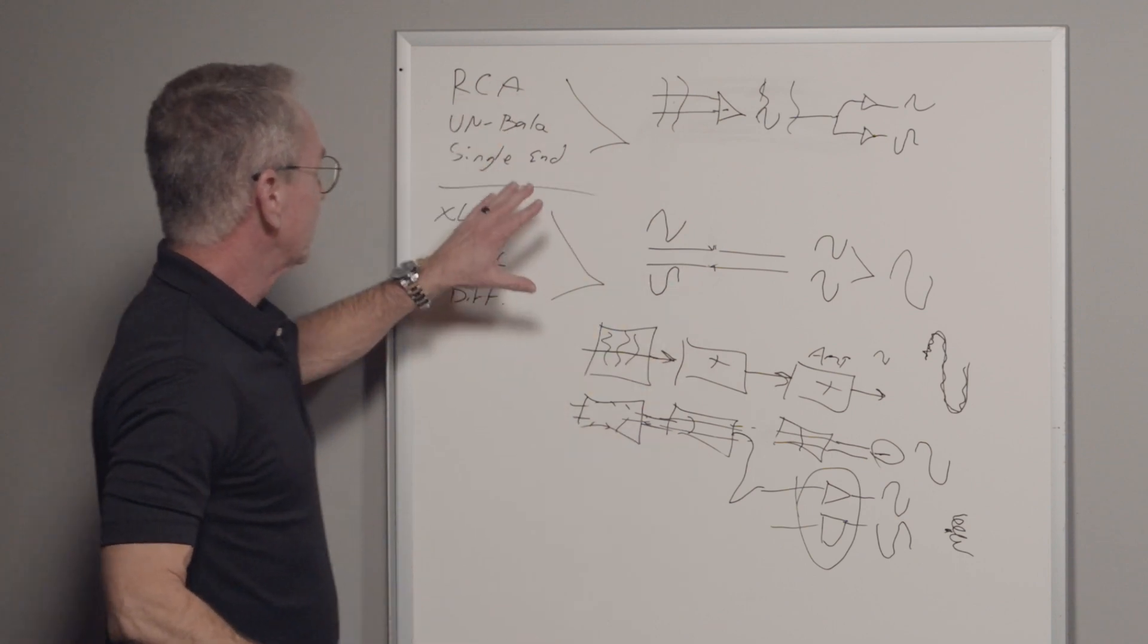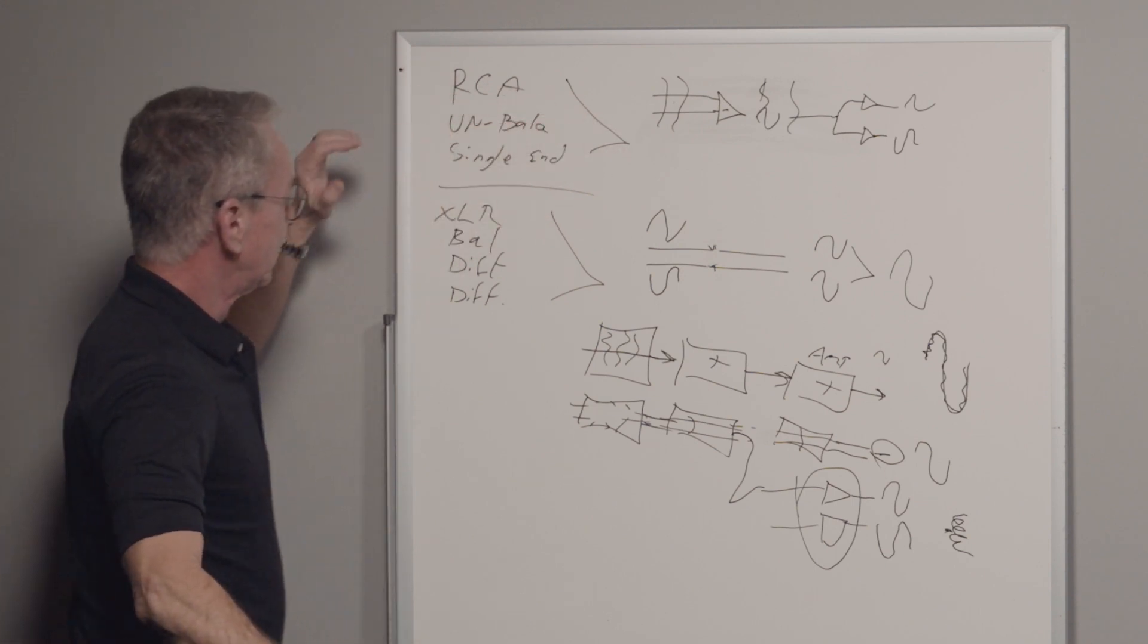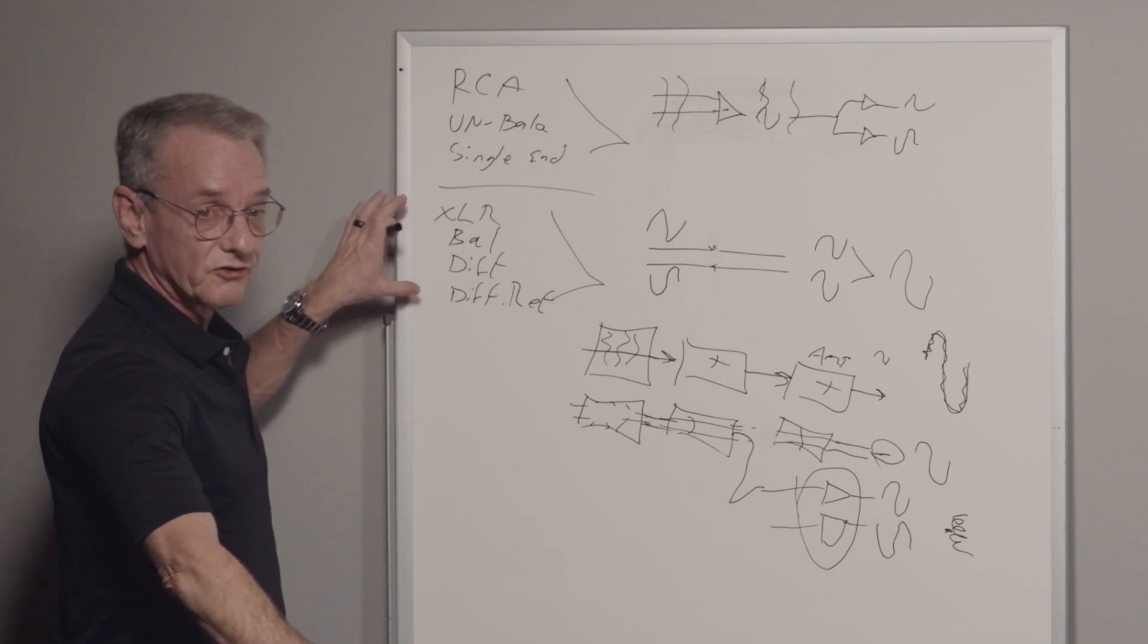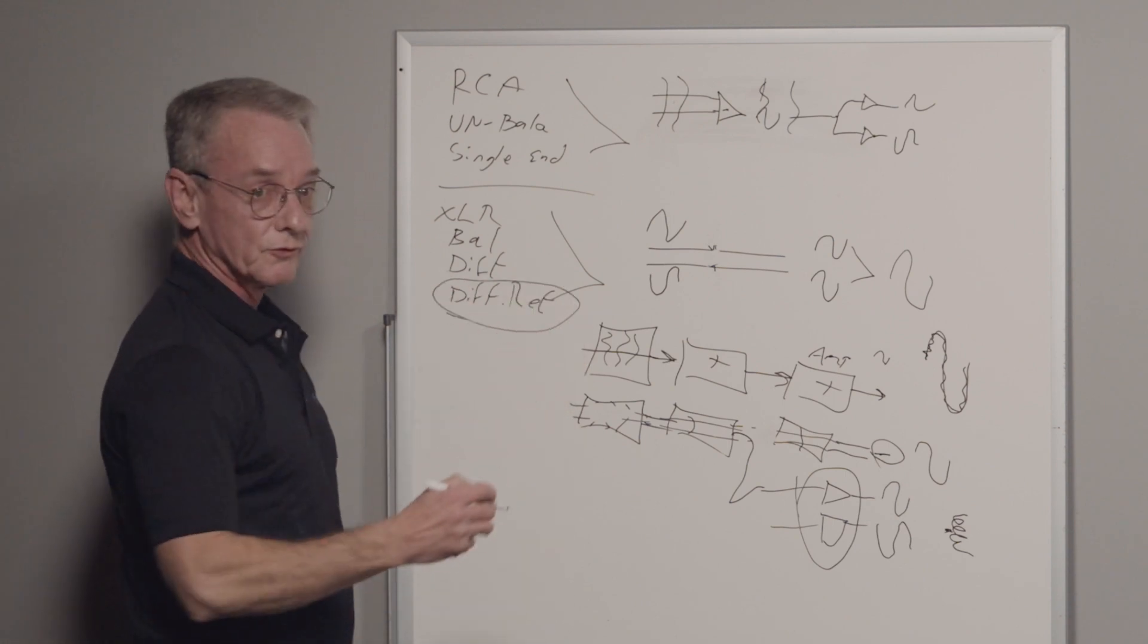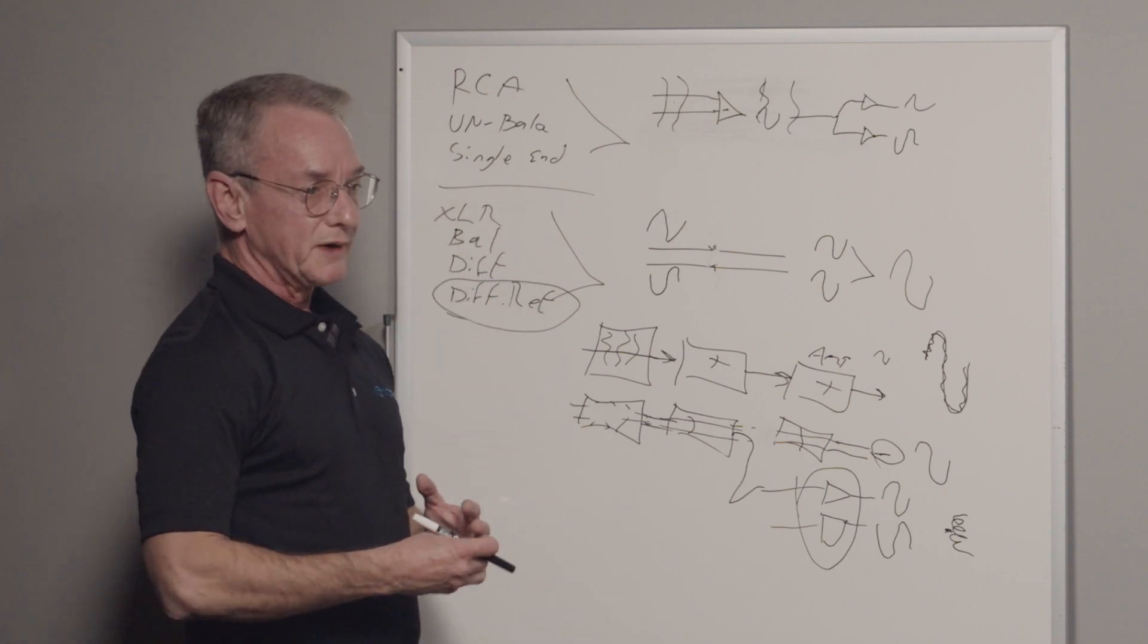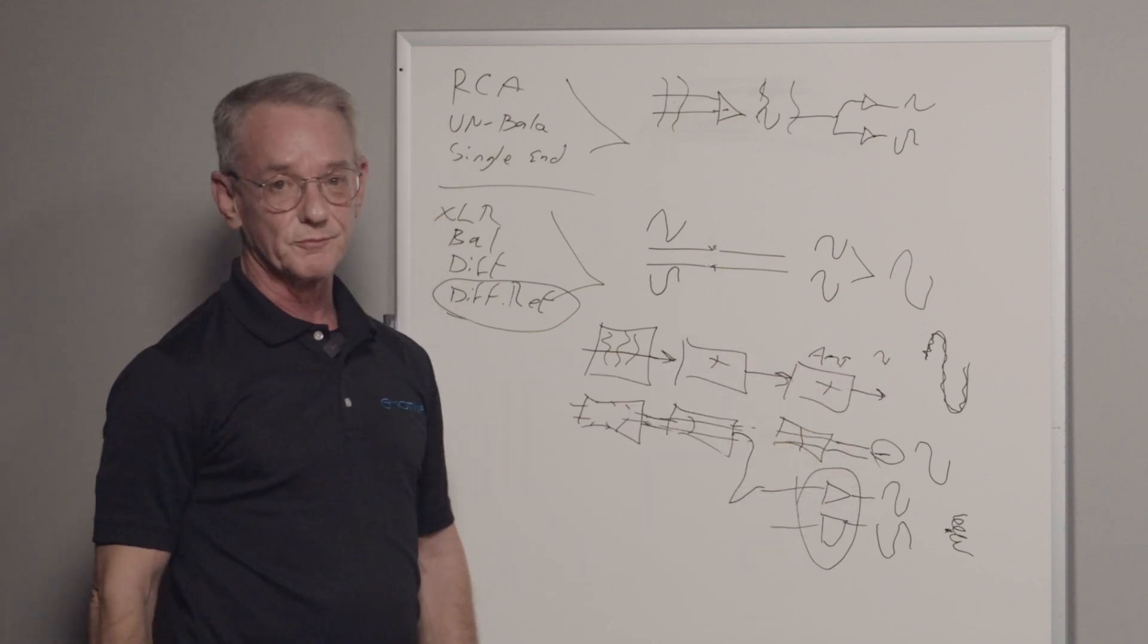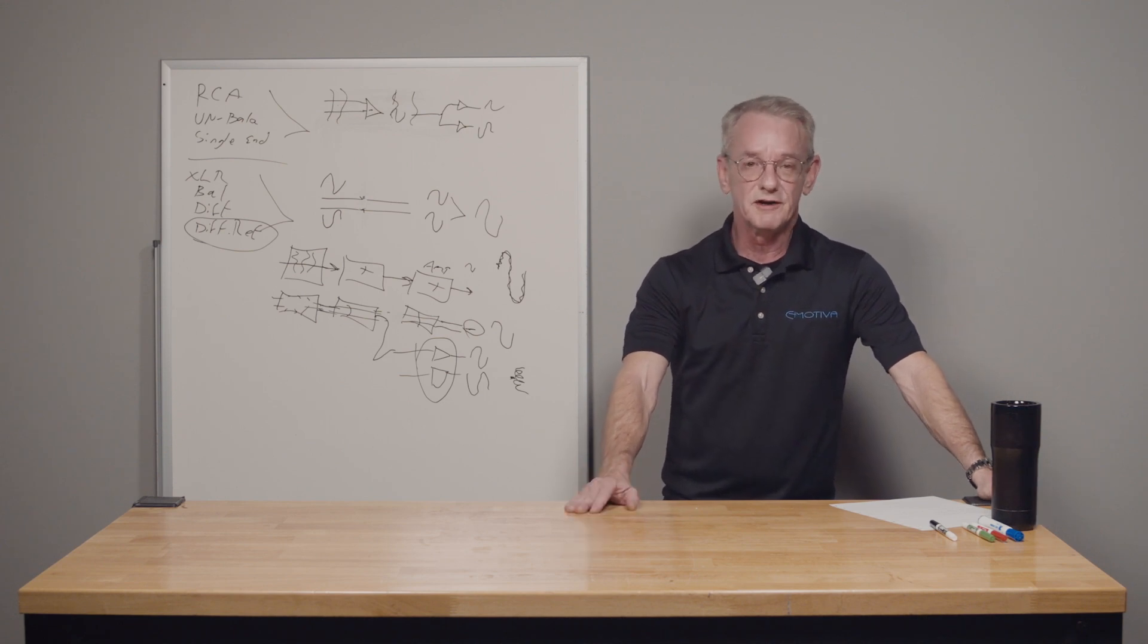So, hopefully that helps explain it. RCA, unbalanced, single-ended, all mean the same thing. It's all going down one wire. XLR, balanced, differential, differential reference, essentially operate the same way. What you're looking for, for maximum signal quality, is a differential reference setup. But anywhere in the chain, if you put a balanced system in there, because maybe you don't have balanced amps, or maybe you do have balanced amps, but everything before it's unbalanced, you're still going to get some of the benefit as it moves through the system. So, there you go. Hopefully, that will help you make an informed decision. And from all of us at eMotiva, happy listening.